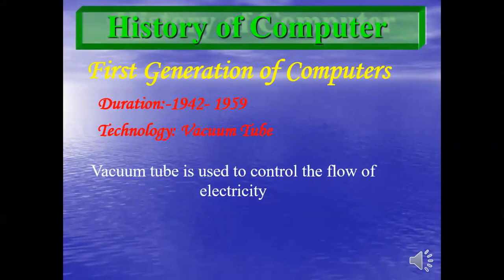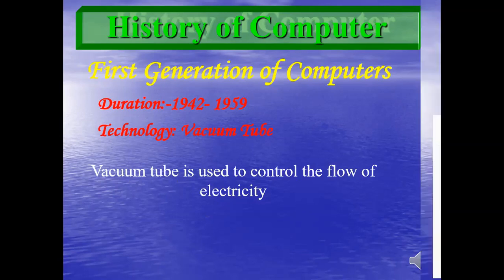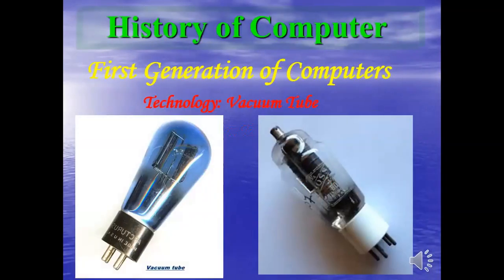The first generation of computers spans from 1942 to 1959, and the technology used was the vacuum tube. A vacuum tube is used to control the flow of electricity. We will see how it looked.